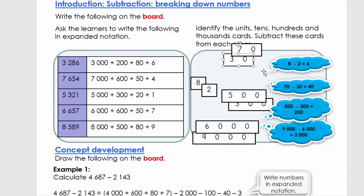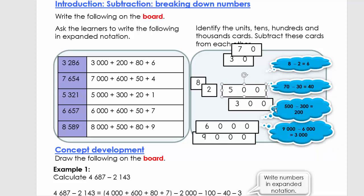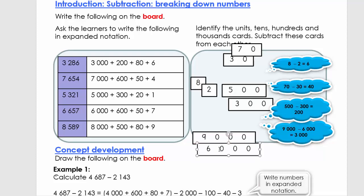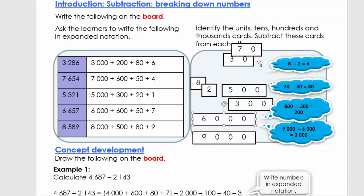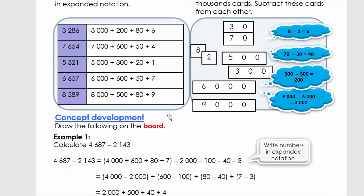When we want to subtract, we always need to put the bigger number first. So let's look at the units: 8 minus 2 equals 6. With the tens: 70 minus 30 is 40. With the hundreds: 500 minus 300 is 200. And here, I'm going to put 9,000 minus 6,000 equals 3,000. I want you to pause the activity. Take out two unit cards, two tens, two hundreds, and two thousands cards and do the same type of activity. Remember always to place the bigger number first when you subtract. Pause.